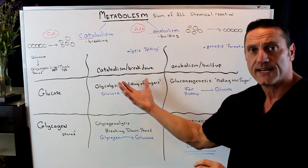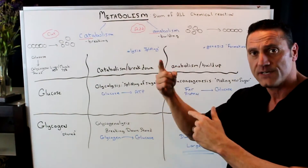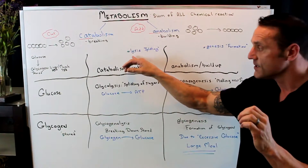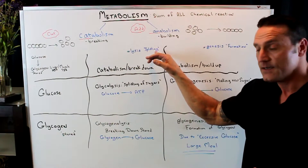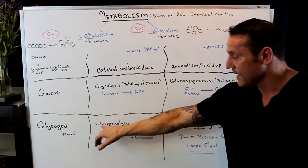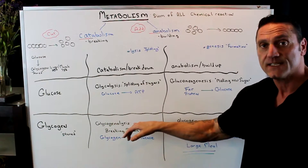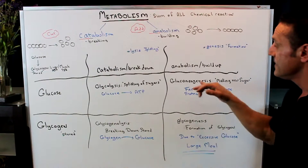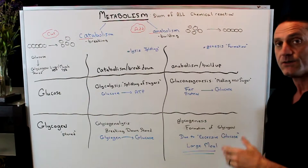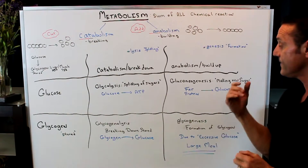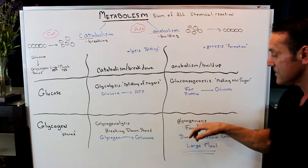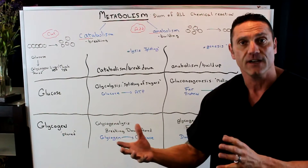We have catabolism, which is the breaking down, and anabolism, which is the building up. Look at the suffixes. When you see '-lysis,' it always means the splitting — glycolysis is the splitting, glycogenolysis is the splitting. '-Genesis' is the formation. So gluconeogenesis is the making of new sugar, the forming of new sugar. And glycogenesis is the formation of glycogen.